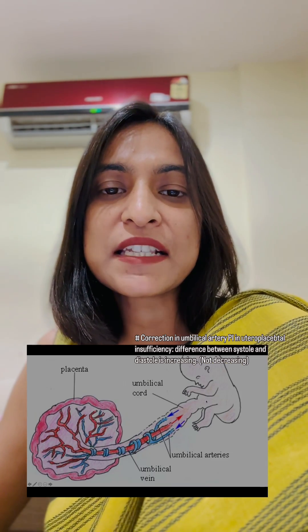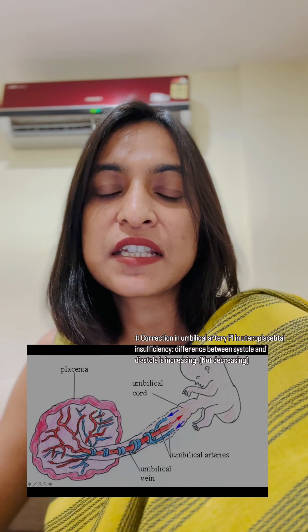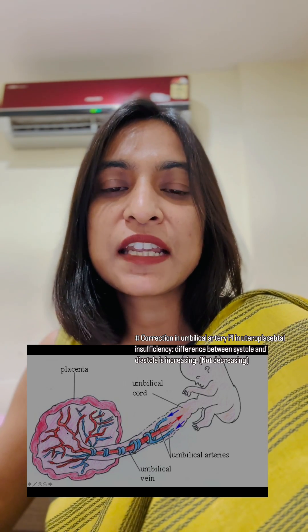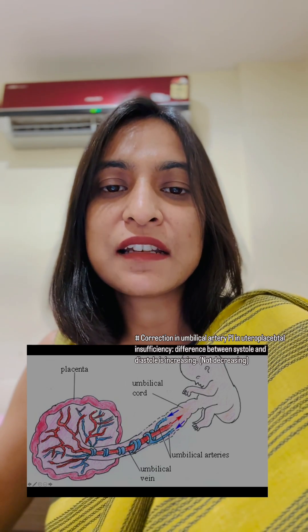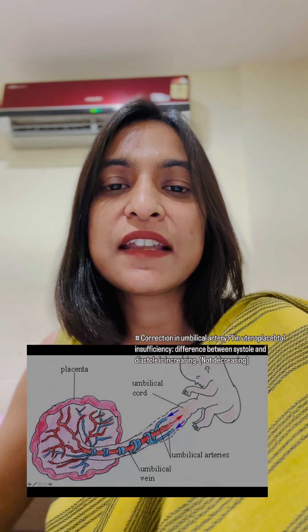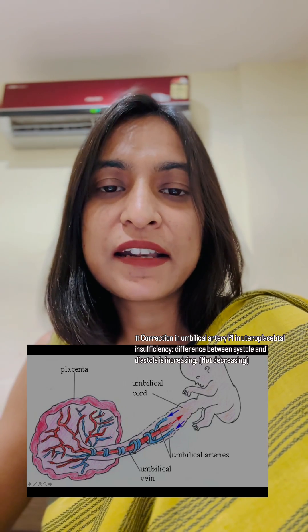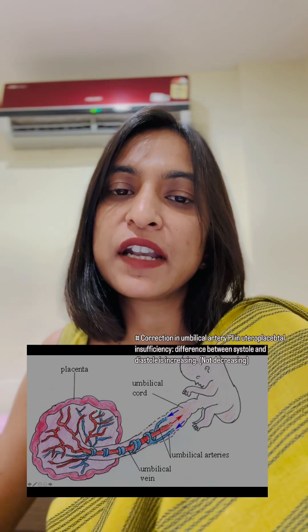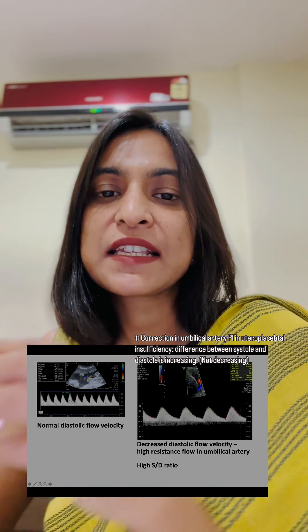If there is utero-placental insufficiency — that is, resistance of blood flow is increasing in the placental vascular beds — resistance will increase in the umbilical artery as well. This will be reflected as decreased blood flow during the diastole.